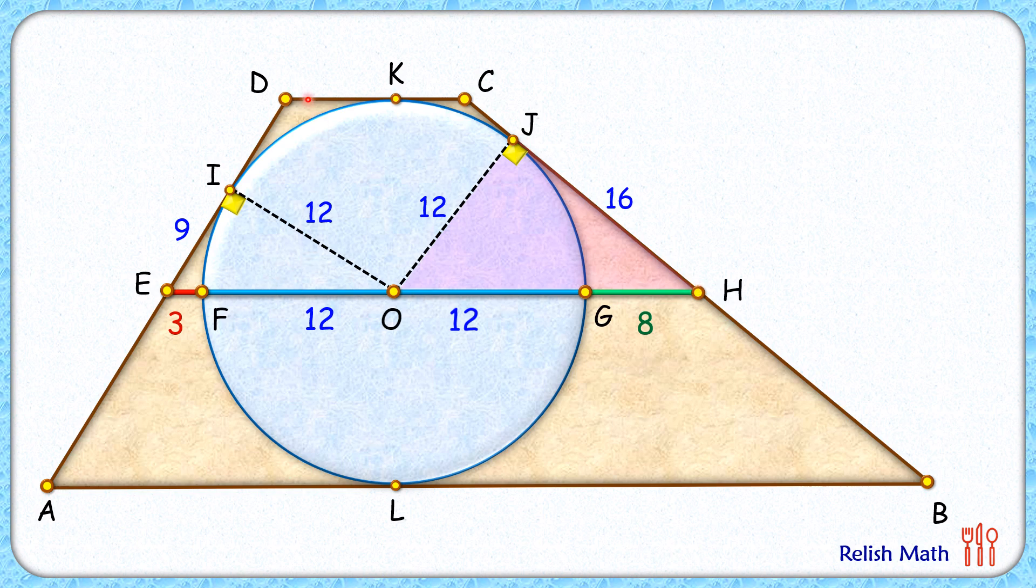Now here let's assume that the length DK is A cm, and from point D we have two tangents DK and DI drawn, and by theorem DI length will be the same A cm. Same way if we assume KC as B cm, now CK and CJ are the two tangents so they will be equal by theorem or CJ will be B cm.